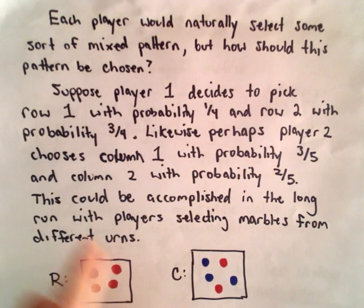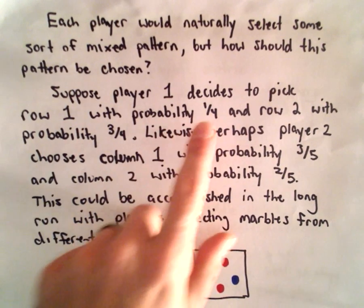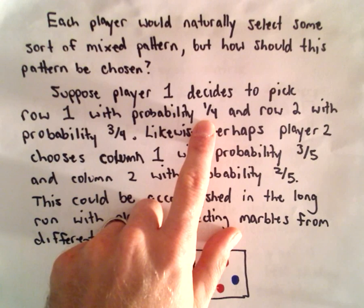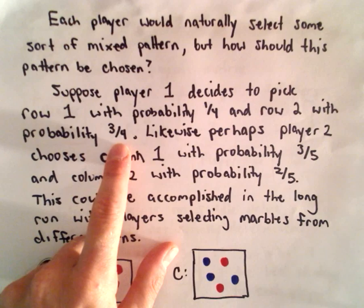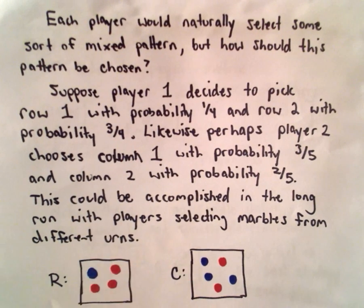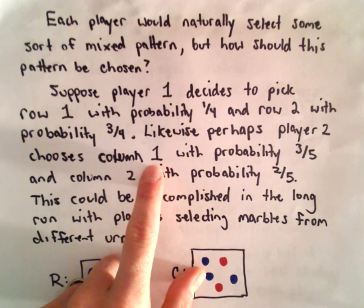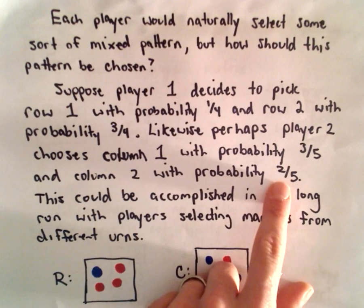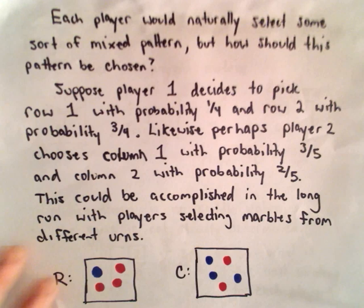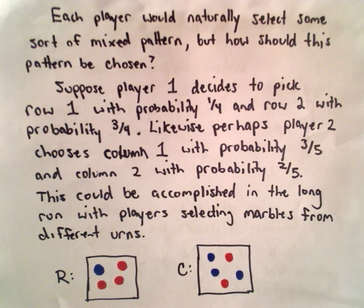Suppose you're player one and you decide to pick row one with a probability of one out of four, or 0.25, and you want to pick row two with probability three out of four. And maybe player two decides to choose the first column with a probability of three-fifths, and column two with a probability of two-fifths. So how could you accomplish those long-run probabilities?